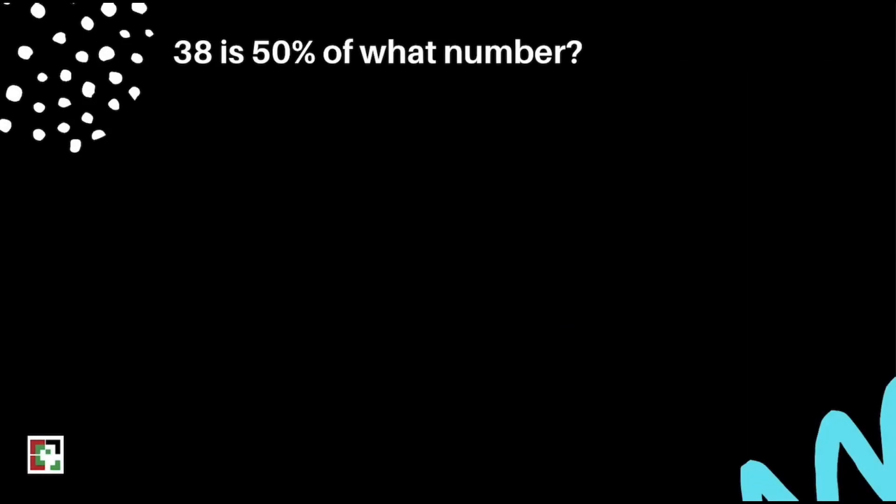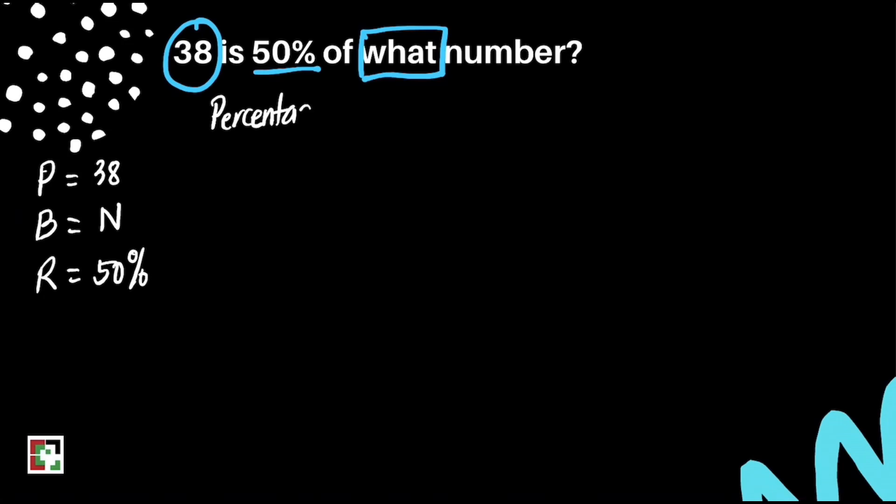We have the first problem here. 38 is 50% of what number? First thing that we should do is to identify our given. Our P here is 38, our base is what we're looking for, and the rate is 50%. We'll be using the formula: percentage over base equals rate over 100.